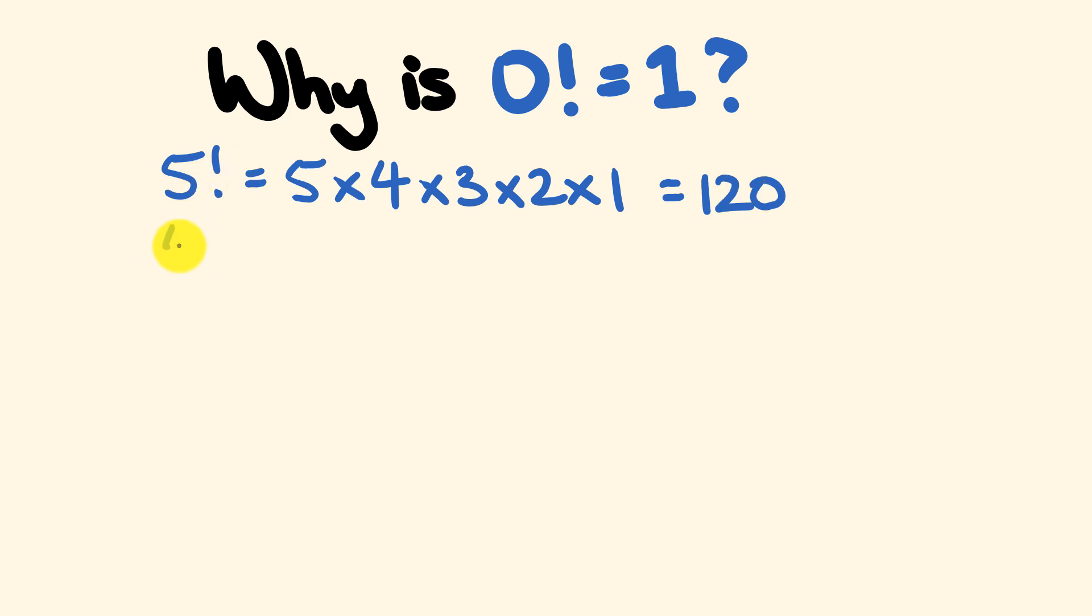Now we can continue this on, so we can work out now four factorial. Four factorial is equal to four times three times two times one, which is equal to 24.